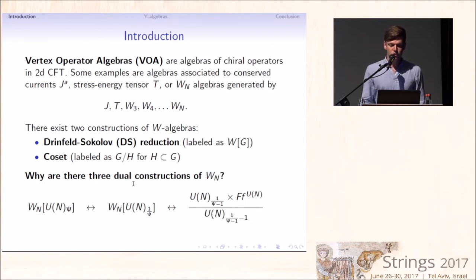There exist two constructions of those W algebras, one based on the Drinfeld-Sokolov reduction that I will label as W of G and another one coset that will be labeled as G slash H. In this talk, I will explain why there are three dual descriptions or constructions of W_N algebras starting from Kac-Moody algebra.